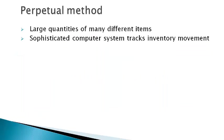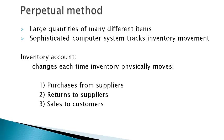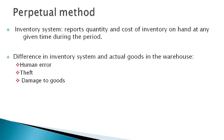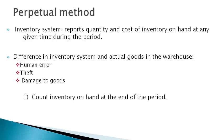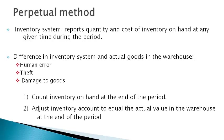The perpetual method is commonly used by companies that sell large quantities of many different items and have sophisticated computer systems to track inventory movement. The system records a journal entry to every change in inventory — purchases, returns, and sales. Tracking is often accomplished using barcodes and scanners. The perpetual method reports the quantity and cost of inventory on hand at any given time. However, the account balance may not equal the amount actually on hand due to human error, theft, or damage. Inventory is counted at the end of the period, and a final journal entry adjusts the inventory account to the actual value in the warehouse.